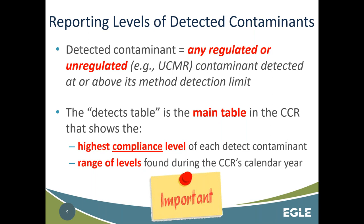The most important thing about the data table is that you are listing detected contaminants. A detected contaminant is defined as any regulated or unregulated contaminant that was at or above its method detection limit. Unregulated contaminants are those sampled under EPA's UCMR — the Unregulated Contaminant Monitoring Rule — and any regulated contaminant is one that is subject to an MCL, a treatment technique, or an action level.